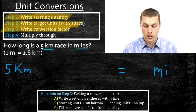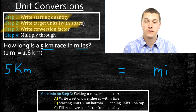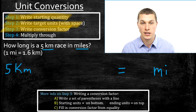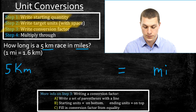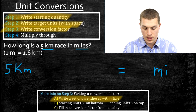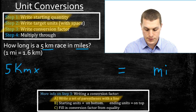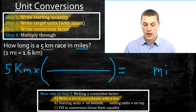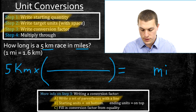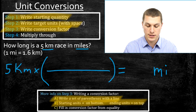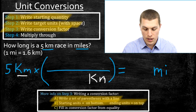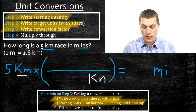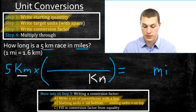Step three is the most involved step — writing the conversion factor. The conversion factor is what takes us from our starting units to our ending units. I've broken this down into sub-steps. Step A: write a set of parentheses with a line through the middle and add a multiplication sign. Step B: put the starting units on the bottom and the ending units on top. Our starting units are kilometers, so kilometers goes on the bottom. You can see why we set up the problem this way — writing our starting quantity on the left tells us what to write on the bottom of the conversion factor.